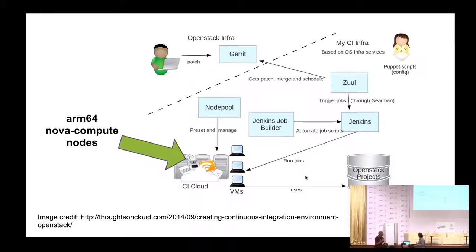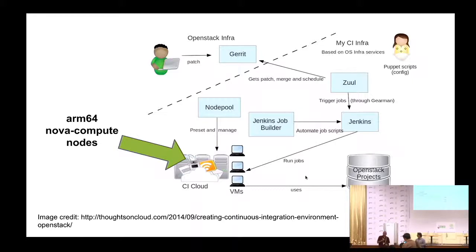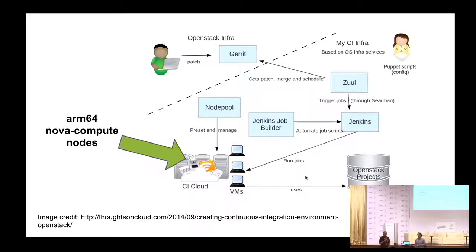This diagram is a high-level overview of all the components that make up an OpenStack CI system — this is one for an x86 deployment, and that is essentially what we're going to create, with the exception of the CI cloud. All the VMs we're going to use are going to be running on ARM64 nodes. This is kind of like the hybrid-type environment discussed during the keynote this morning, where you've got x86 and ARM working together. This CI system is going to run partially on x86 and partially on ARM. We'll leverage all the existing CI components on x86 and just use ARM64 nodes for actually running the tests.